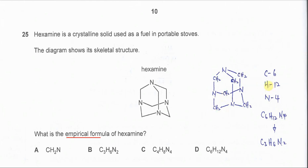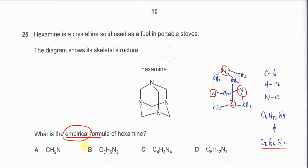Hydrogen is one, two, three, four, five, six, seven, eight, nine, ten, eleven, twelve — so hydrogen is twelve atoms. Nitrogen is one, two, three, four. So we get C6H12N4. Because it's asking for the empirical formula, the simplest ratio is C3H6N2, so the answer must be B.